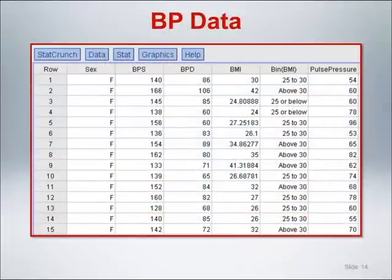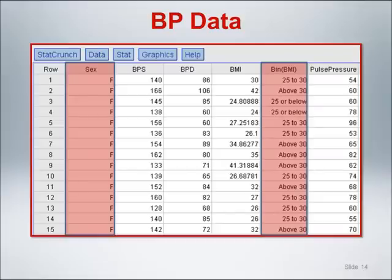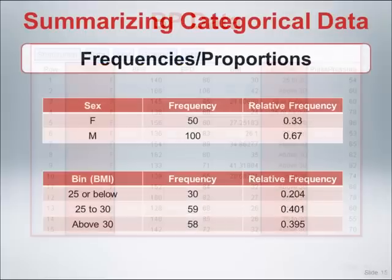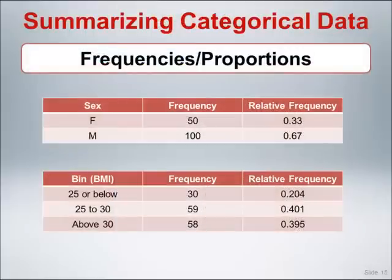Let's move from descriptive summary measures for continuous data to those for categorical data, and look at providing frequency tables for the SEX and BIN BMI variables in the BP dataset. Generally referred to as one-way frequency tables, these tables provide information on the frequency or count of observations in each category of the variable, as well as the relative frequency or percent of the total number of observations that this count represents. For this data, there are a total of 150 individuals with a gender designation.